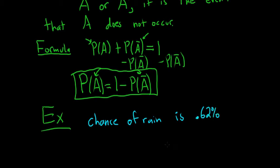That's kind of evil because it's got a decimal and it's a percentage. And we want the probability that it does not rain. What is the probability that it does not rain?